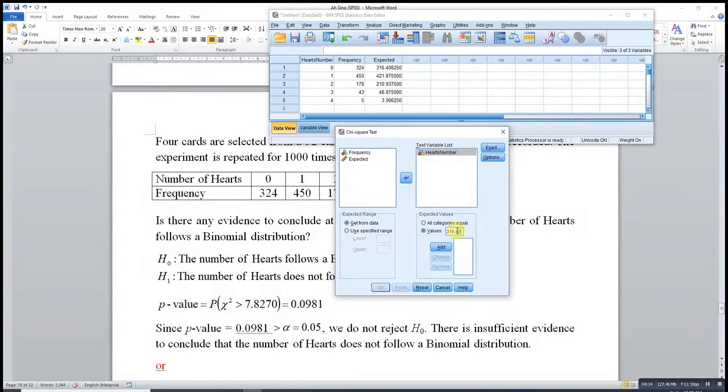So 316.40625, add. Then 421.875, add. Then 210.9375, add. 46.875, add. And the last one, 3.90625, add. Then press OK.